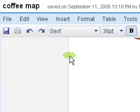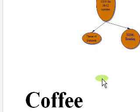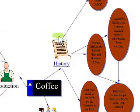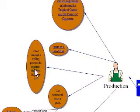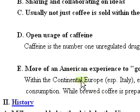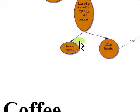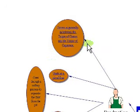All right, so now we have a document here, and this just happens to be my concept map document that I just created. It has a picture of my concept map and the outline I imported from Inspiration so that others would see it. But I need to let other people be able to see this.